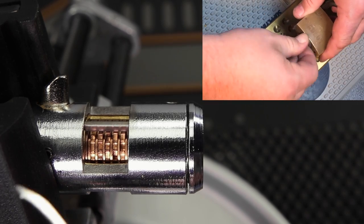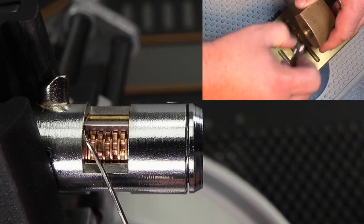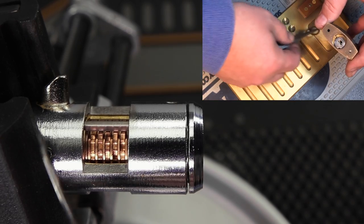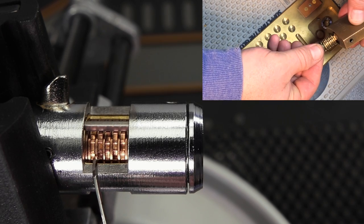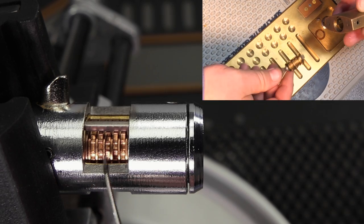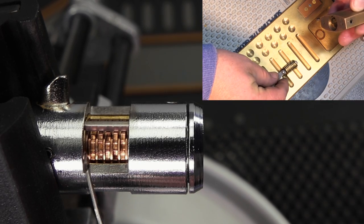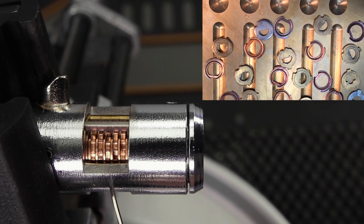How this lock is put together is it has a front face plate which holds this whole disc pack together. Inside the disc pack you have individual discs separated by washers. These washers are important because they make it so that each disc can be operated independently so that the key will wear out less, the lock will open smoothly, and it makes for a much better lock.